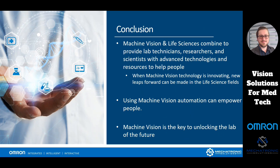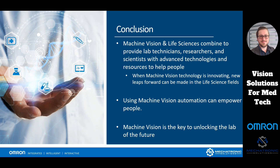What I want you all to take away is that machine vision and life science combine to provide lab technicians, researchers, and scientists with advanced technologies and the resources to help people. When we can innovate in machine vision, we can make new leaps forward in the medical fields — new types of visual spectrums can help inspect cells better and help people live longer. Using machine vision within automation, we want to empower people, not replace them. We want the work of the machine to go to the machine, and to man goes the thrill of creation. This is the key to moving towards the lab of the future.